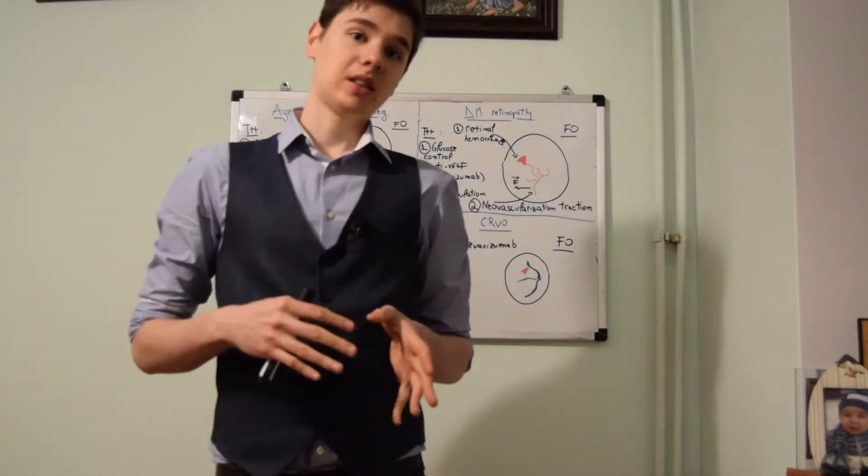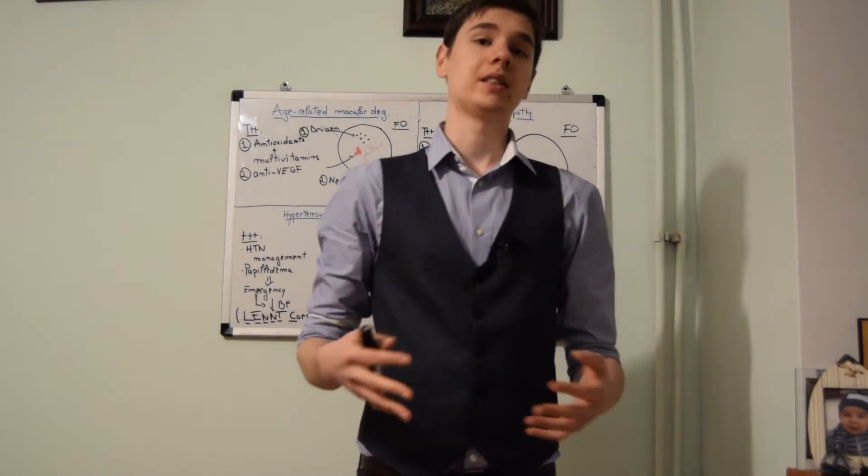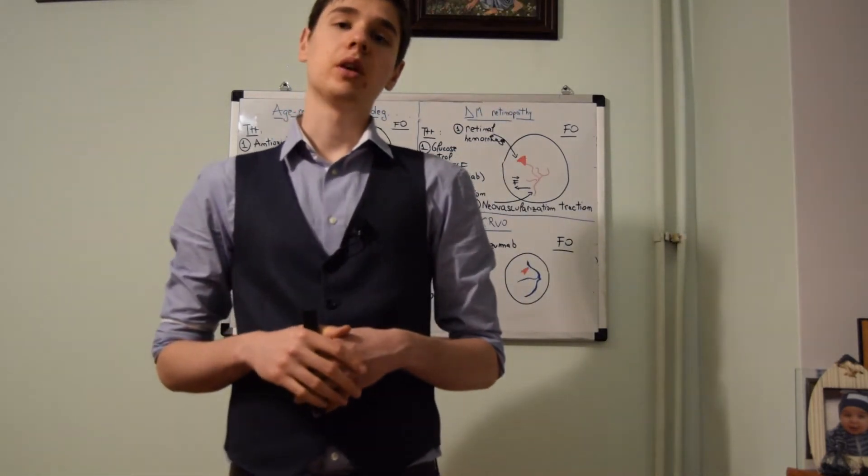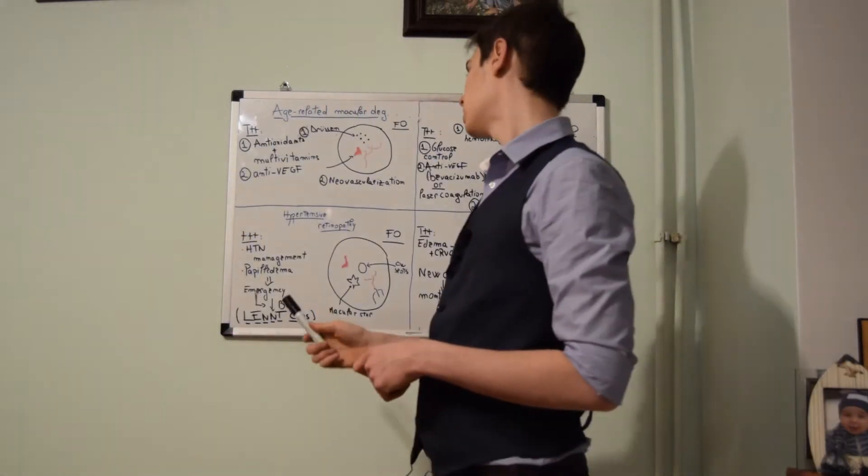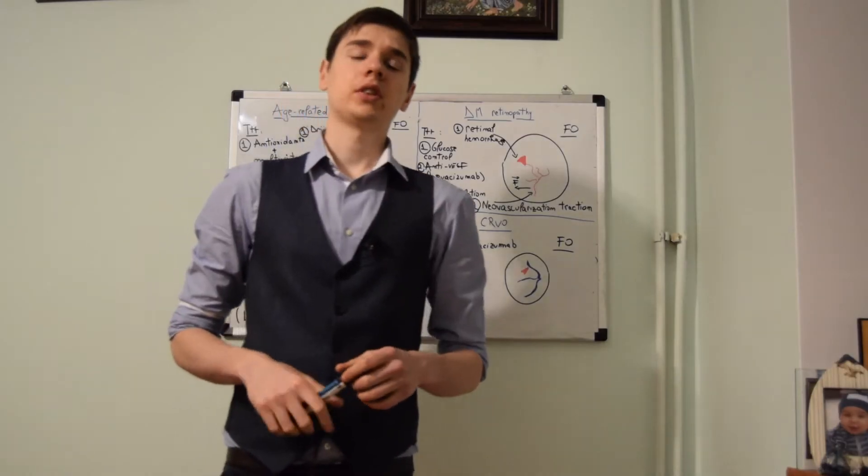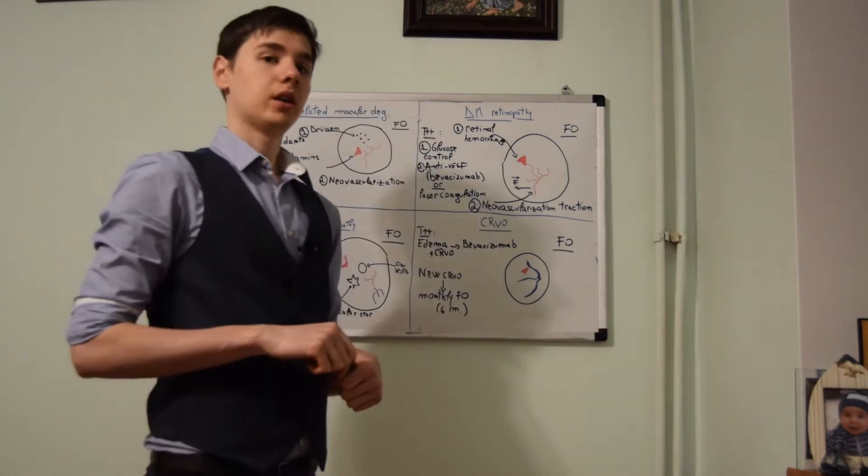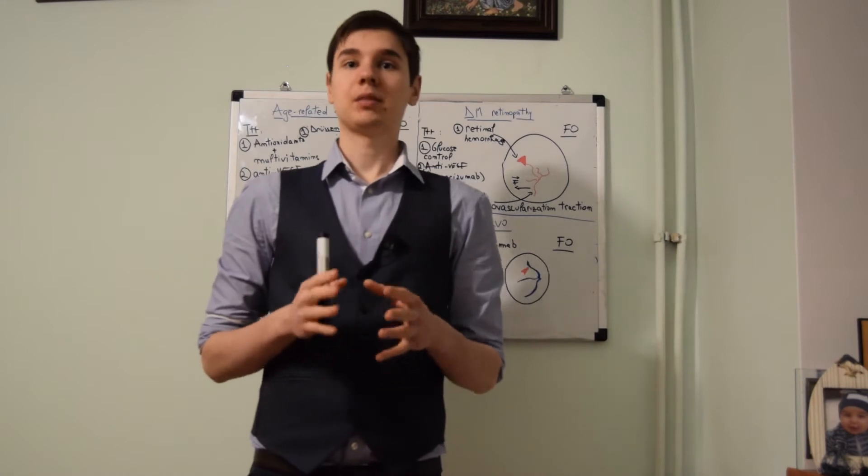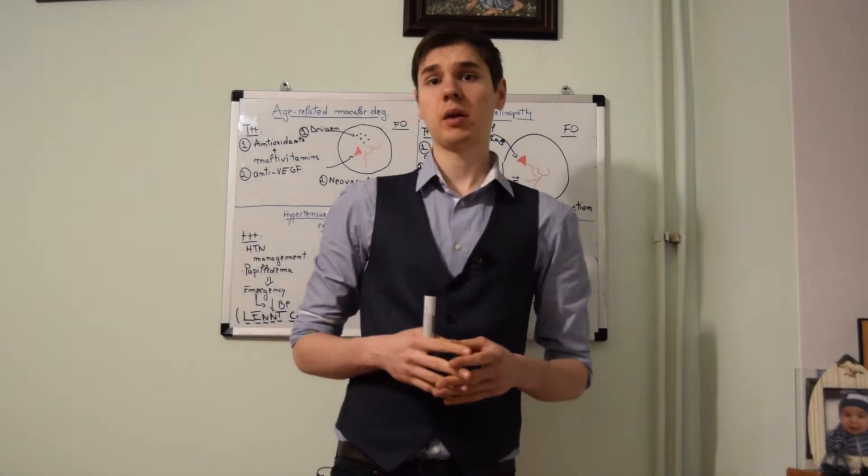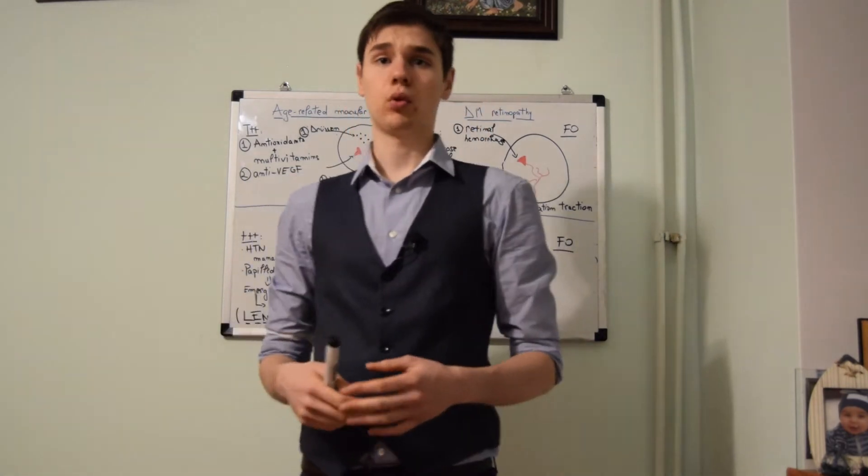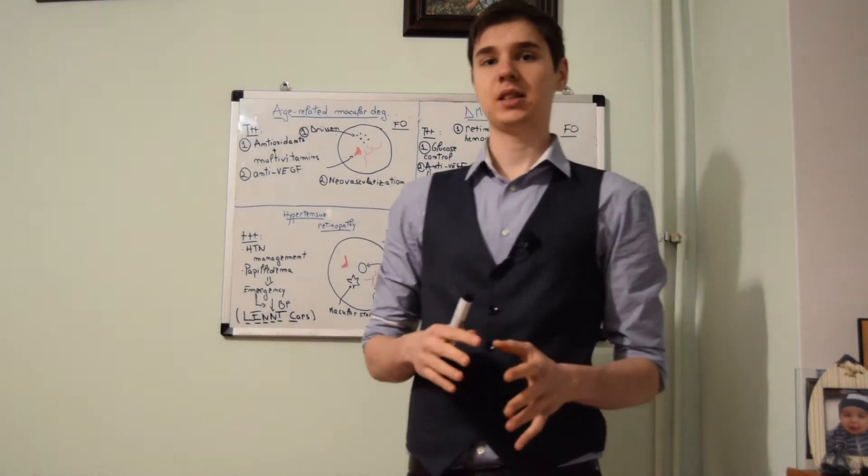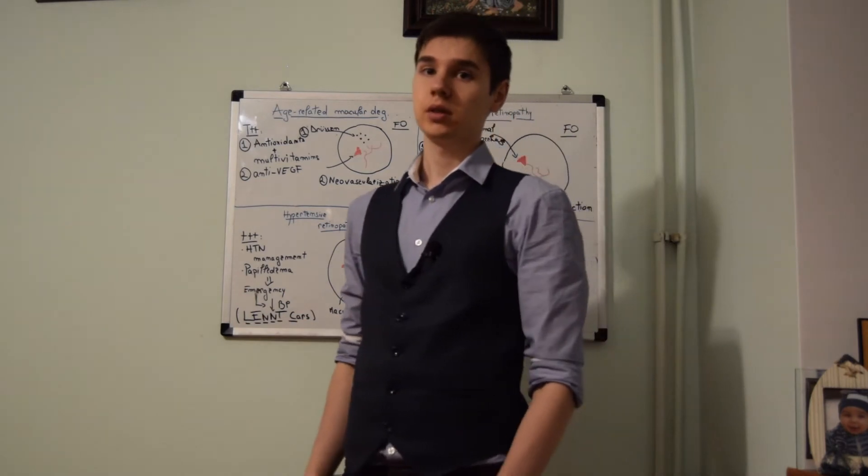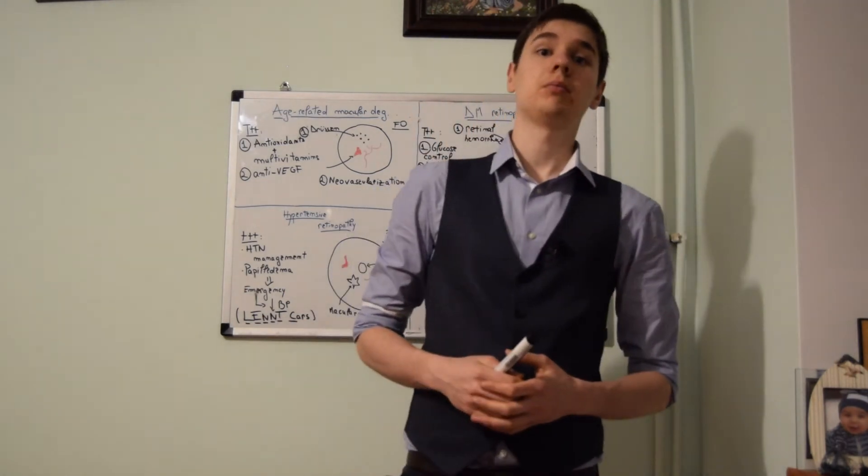The next best step that the examiners search for in hypertensive retinopathy is usually the management of hypertension. However, on the fundoscopic image, we can have papilledema. If the patient has papilledema and a history of hypertension that is poorly controlled, then the best next step is to decrease the blood pressure, this being an emergency.